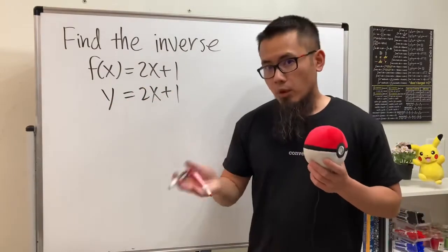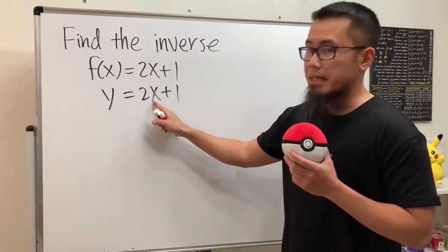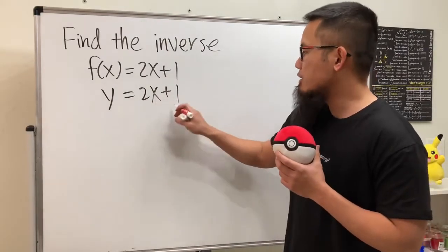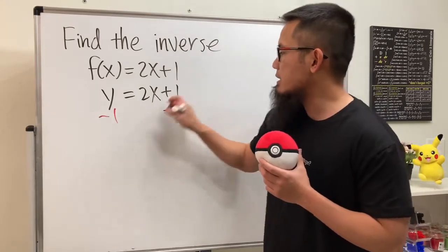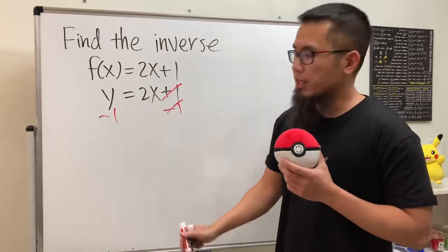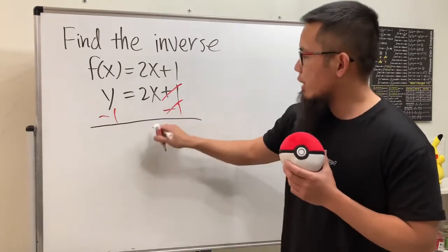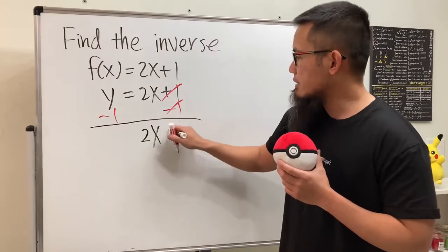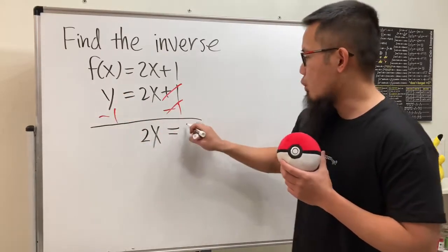All we have to do now is just get the x by itself and that will be it. So to make that happen, let's just minus 1 on both sides so that these will be cancelled. Let me write this down first, so we have 2x and that's equal to y minus 1.